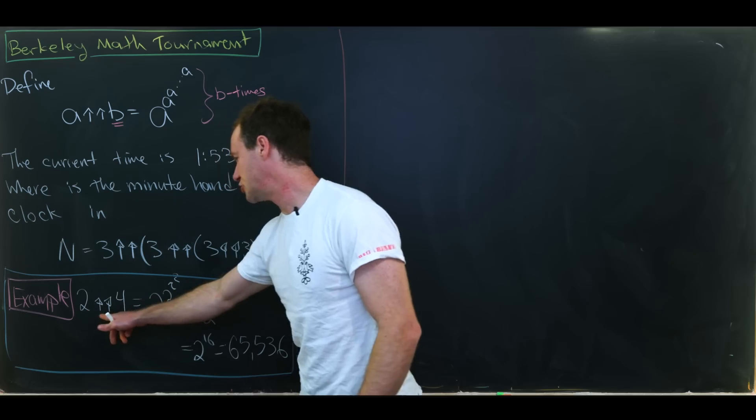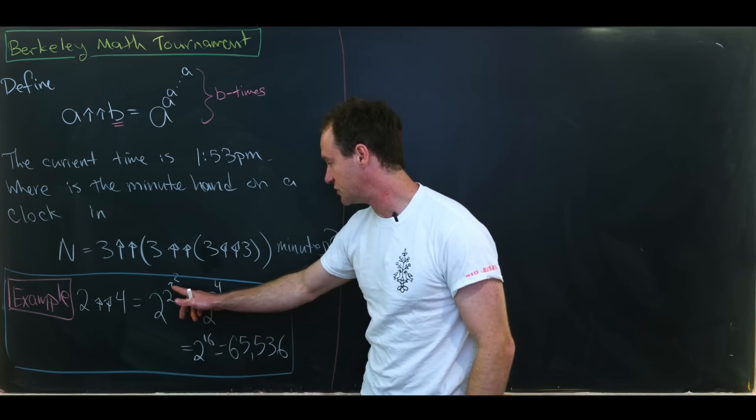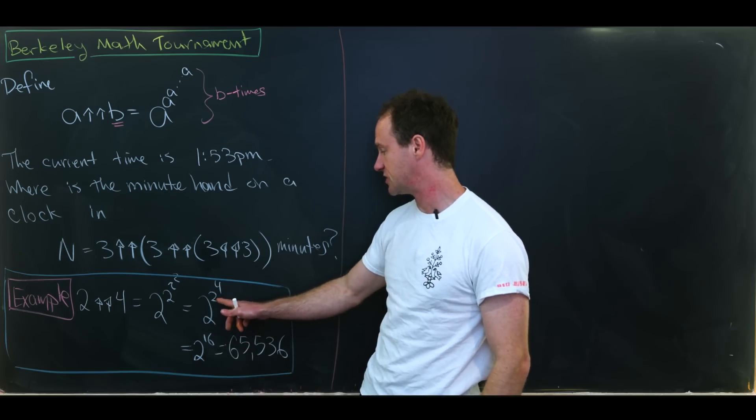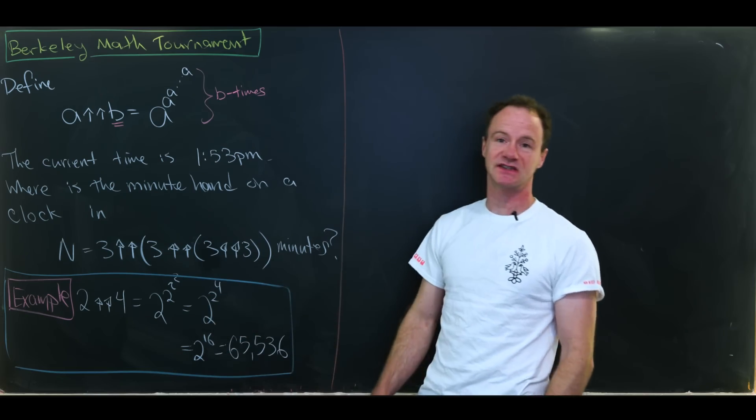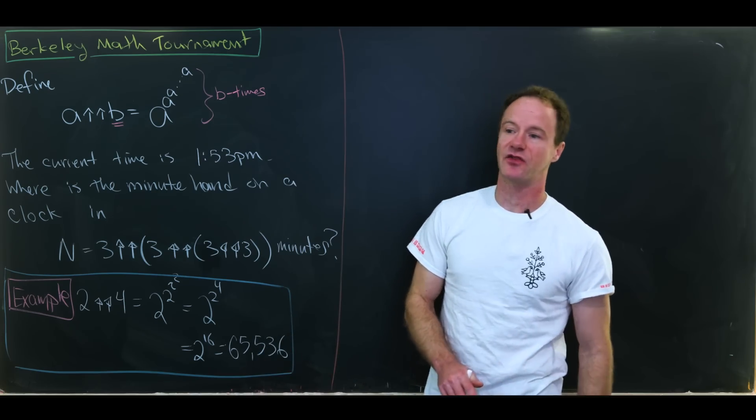So as an example 2 arrow arrow 4 is equal to 2 to the 2 to the 2 to the 2 which is 2 to the 2 to the 4 which is 2 to the 16 which is finally 65,536.